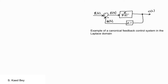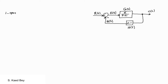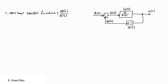Please note that the transfer functions G and H are not necessarily unique for a particular system. Let's consider the following canonical feedback control system. The open-loop transfer function is defined as B over E. The relation between B and E is simply that B equals HG times E, so B over E equals GH.